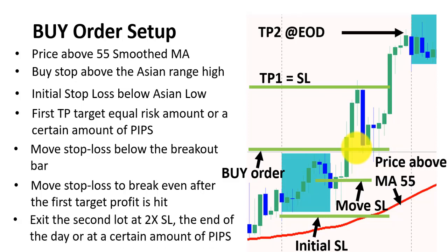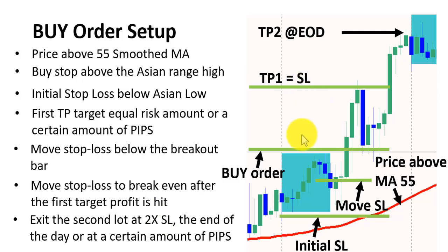For TP2, the way you trade this is with two positions — you enter either two lots at the same time, or if it's one lot, you exit half at TP1 and the remaining half at TP2. Where do you exit the second half? You can either close it at twice the stop loss — so if the stop loss was 20 pips, TP1 is 20 pips and TP2 is 40 pips — or you wait till the end of the day to exit your trade, or use a specific number of pips in mind as your TP2.